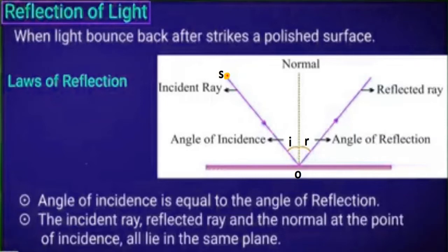There are two laws of reflection of light. Number 1: the angle of incidence is equal to the angle of reflection, that is, angle I equals angle R. Number 2: the incident ray, the reflected ray, and the normal at the point of incidence all lie in the same plane.